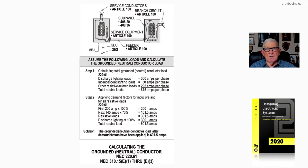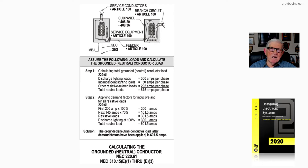Dropping down to the feeder, we have Article 100 that defines the feeder, but we go to Article 215 for the requirements if the feeder is inside the building. If the feeder is outside the building in any way, then it's Article 225.